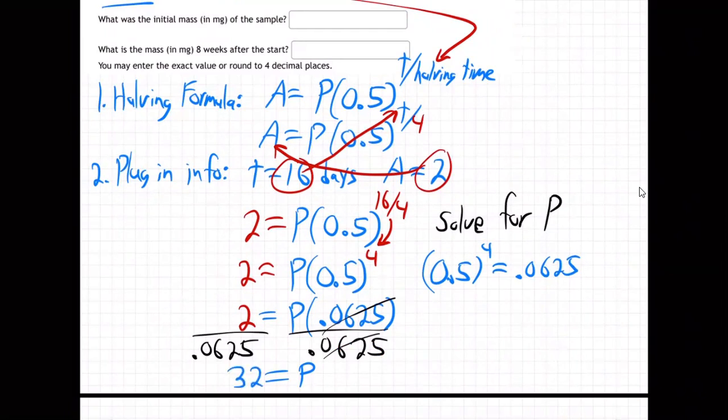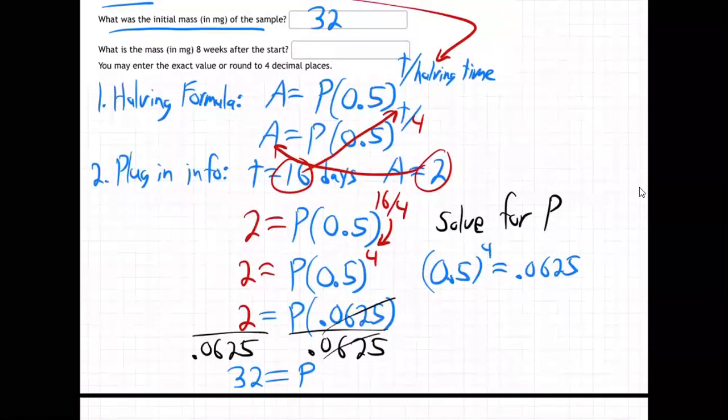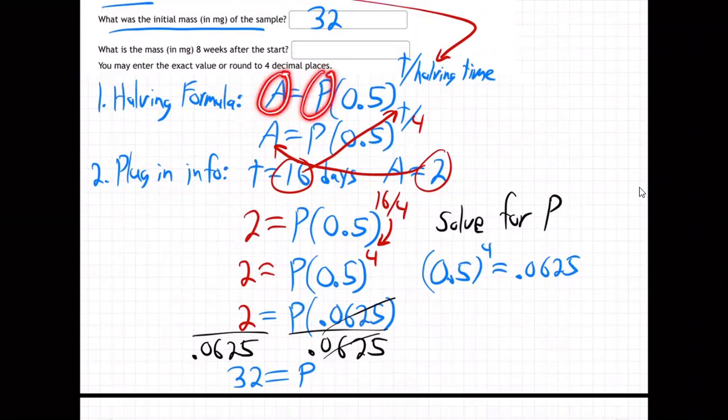That is the initial mass, 32. That's their question - what is the initial mass? That's the starting amount. P always is in these formulas, same thing for the financial formulas. A was the amount of money later, P was the principal investment. It's the same thing for biology examples. We just found P is 32, the starting or initial amount.